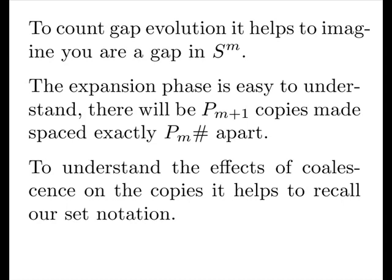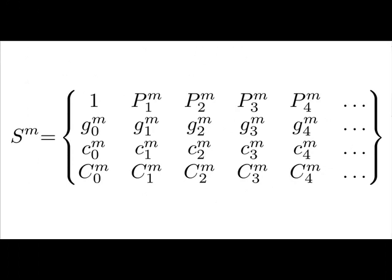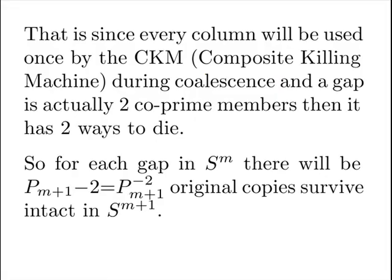To understand the effects of coalescence on the copies, it helps to recall our set notation. Remember, the top row is coprime members and the differences represent the second row, the gaps. This means each gap is actually two neighboring coprime members. That is, since every column will be used once by the composite killing machine during coalescence, and a gap is actually two coprime members, then it has two ways to die.